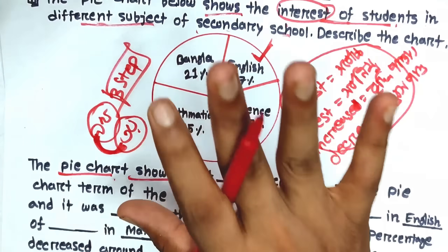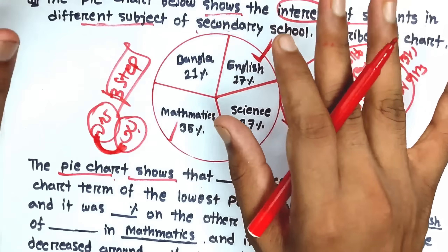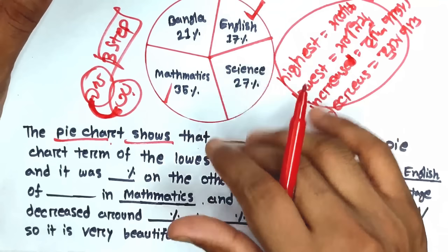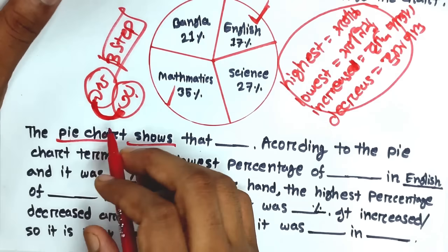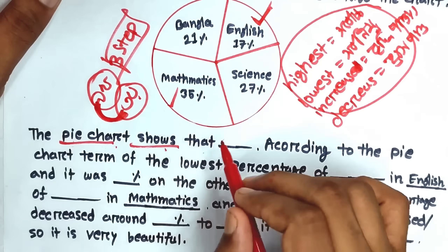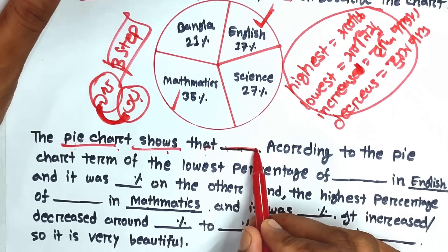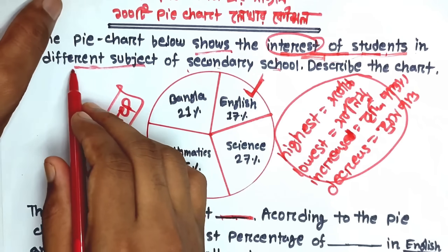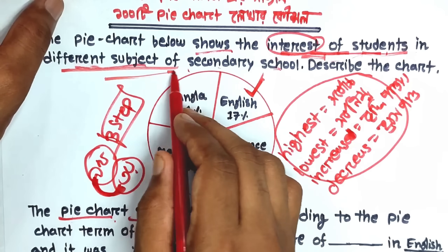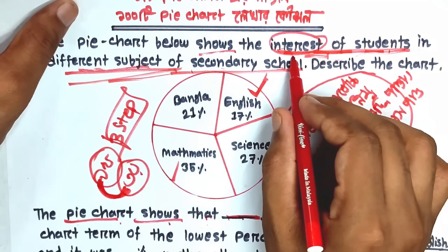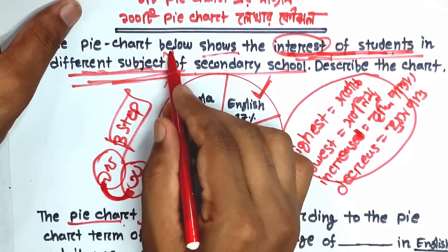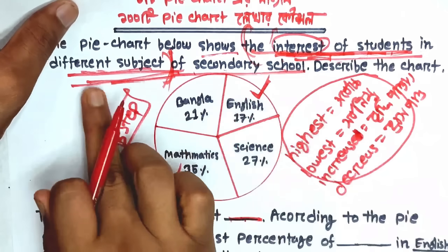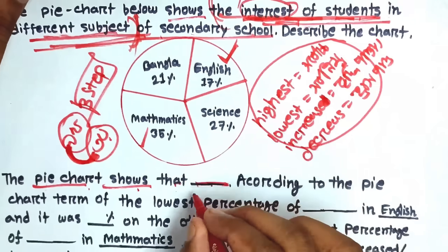This is the Reefat Academy YouTube channel. Click on the video option and click on the link. I will see the graph chart in my class. The pie chart shows the interest of student in different subjects of secondary school. This is the first link — Interest of Student in Different Subjects of Secondary School.